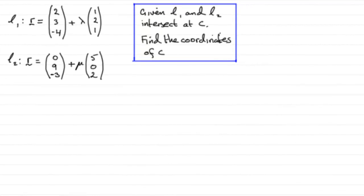Now, in this question, we're given the equations of two lines, L1 and L2, and we're also told that the lines L1 and L2 intersect at a point C, and we've got to find the coordinates of C.